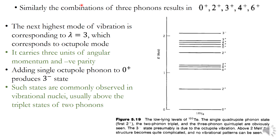The next highest mode of vibration corresponds to λ = 3, which is the octupole mode. It carries three units of angular momentum and has negative parity, since (−1)^3 = −1. Adding a single octupole phonon to the ground state (0+) gives a 3− excited state. Such 3− excited states are commonly observed in vibrational nuclei, usually above the two-phonon triplet states.